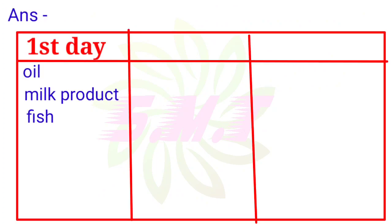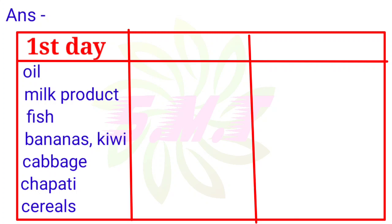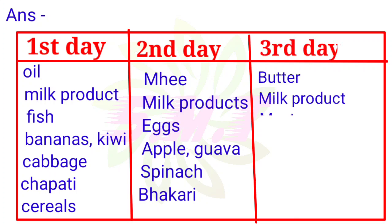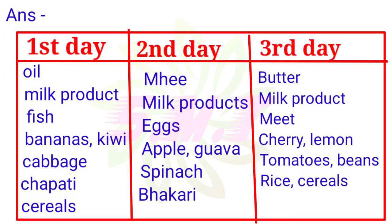Answer: 1. First day — Oil, milk products, fish, bananas, kiwi, cabbage, chapati, cereals. 2. Second day — Ghee, milk products, eggs, apple, spinach. 3. Third day — Butter, milk products, meat, cherry, lemon, tomatoes, beans, rice, cereals.